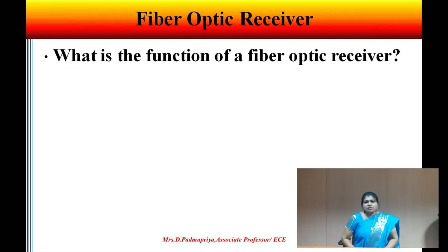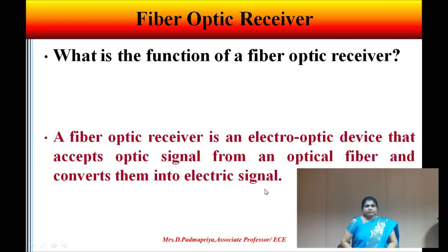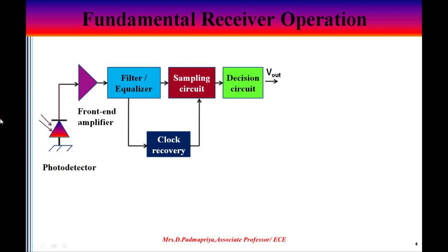Let me discuss now what is the function of a fiber optic receiver. A fiber optic receiver accepts the optical signal from the transmitted end and converts them into electrical signal. This diagram shows the basic components of an optical receiver. The first element is the photo detector, which can be either a PIN diode or an avalanche photodiode. This photo detector produces an electric current that is proportional to the received power level.